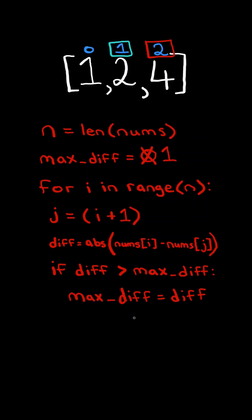We add 1 to get its neighboring index. We calculate the difference and update maxDifference. And we continue.